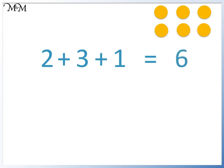We can add these three numbers in any order. We have 1, 2 and 3. We have 1 counter, 2 counters and 3 counters.